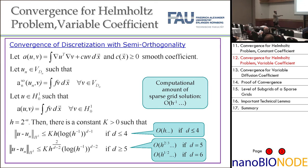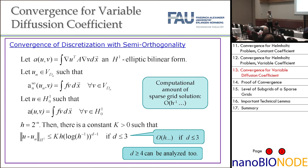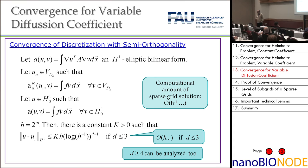Even H¹ convergence of order h^(1/2) — when you have so few grid points in, say, dimension six — is really great. And I have recently also proved the case where the principal part coefficient is variable. The proof takes some time due to technical difficulties, but we can show optimal convergence up to dimension 3. For dimension 4 and higher, the analysis still needs more work.